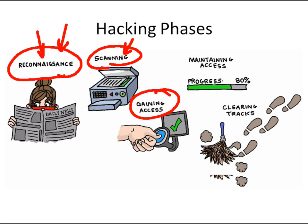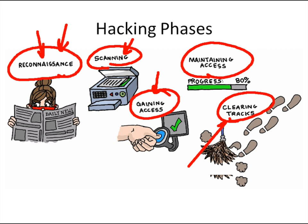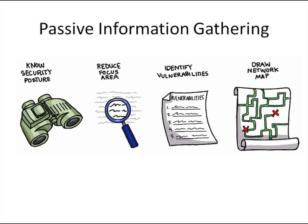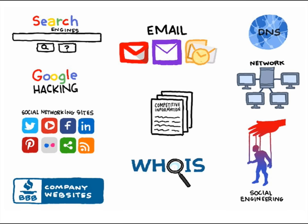An attacker wants to gain access and then maintain that access, doing it completely anonymously — covering their tracks so they can't be identified. Passive information gathering is important because attackers don't want to waste their time. If they can find easy low-hanging fruit, that's the vector they'll use. As they reduce their focus area and identify vulnerabilities, once they get in it's much easier to do enumeration and further scanning of the rest of the network.